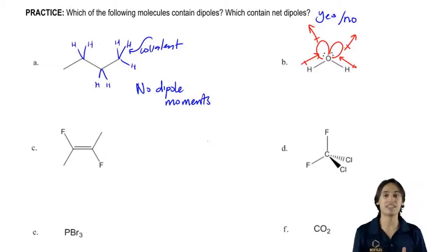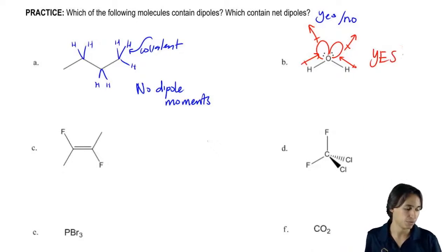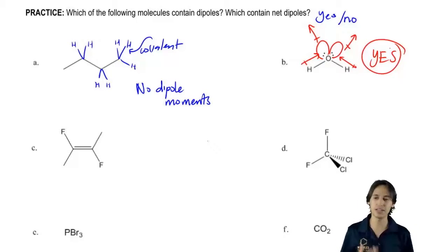So that means on the up and down axis, these are not canceling out. In fact, they're adding to each other. So the answer is that yes, this would have a net dipole because they're not perfectly canceling out. Does that make sense?